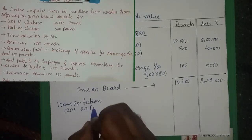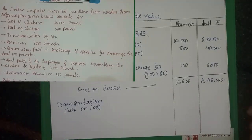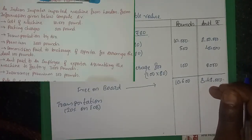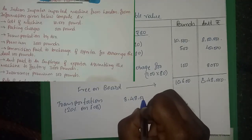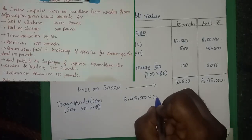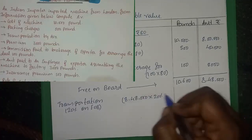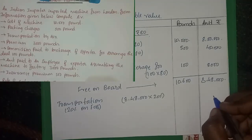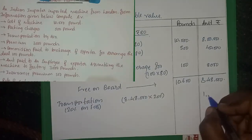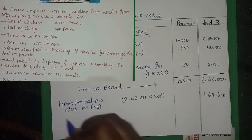The format is available in the video description link. Transportation charges: the FOB value of 8,48,000, plus 20% for transportation, gives a total. Converting directly, the transportation bundle comes to 1,69,600 rupees.